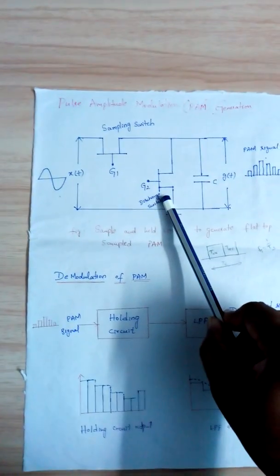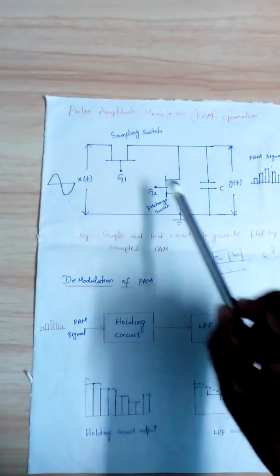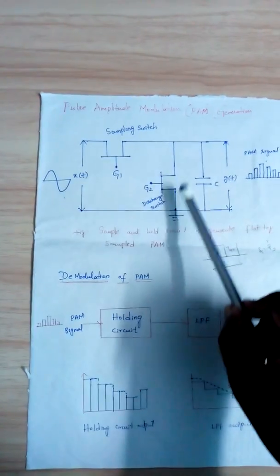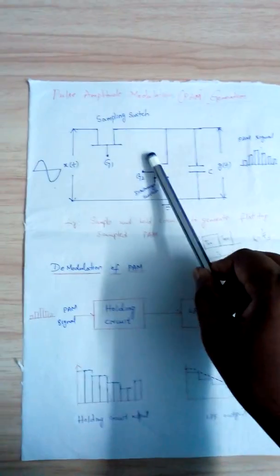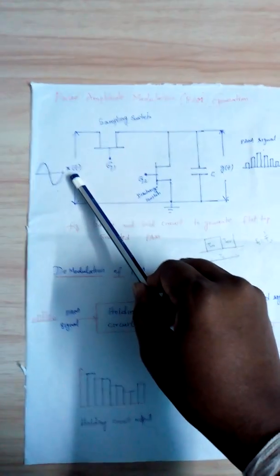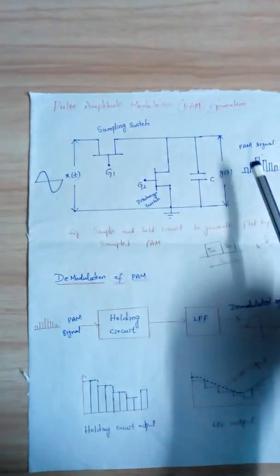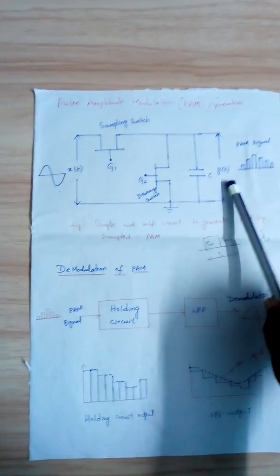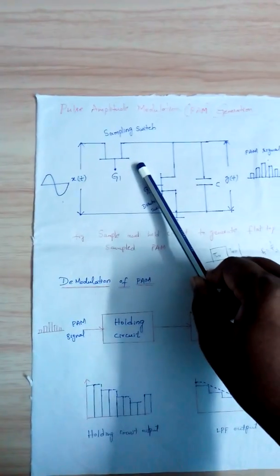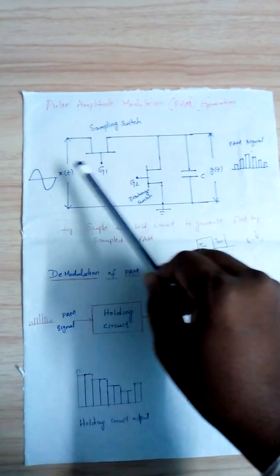Each switch is essentially a field effect transistor, with source, drain, and gate terminals. The continuous time signal X(t) is applied at the input side, and the output is taken across the capacitor C in the sampling switch.